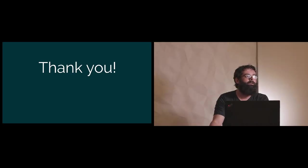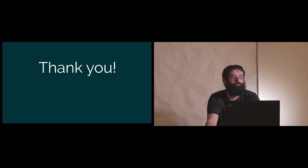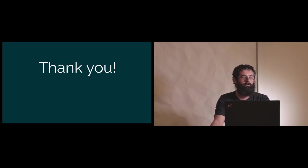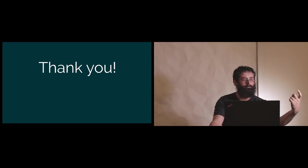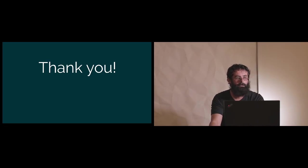Quick question: for atomic swaps, how can you use different curves? I believe it involves a proof of discrete logarithm equivalence between the two — there is an existing construction to say that the ratio between two points in one curve is equal to the ratio between two points in another curve, and when you plug that in, it works out.